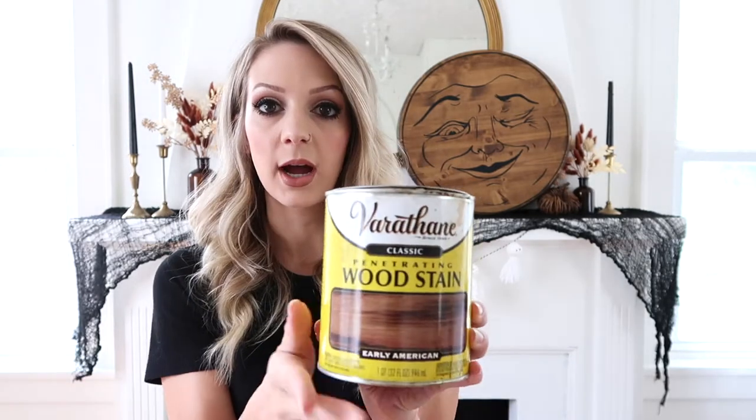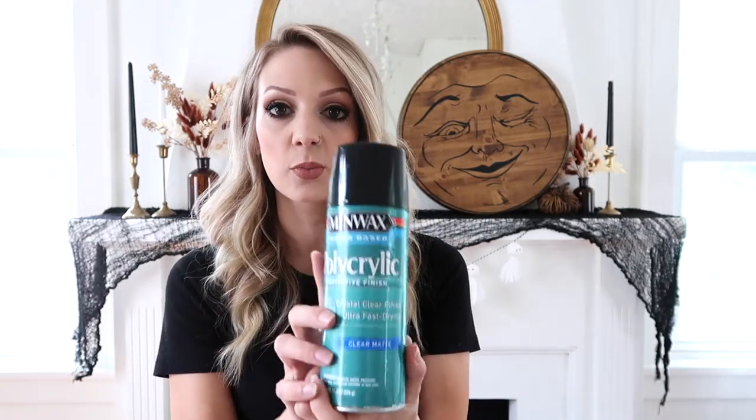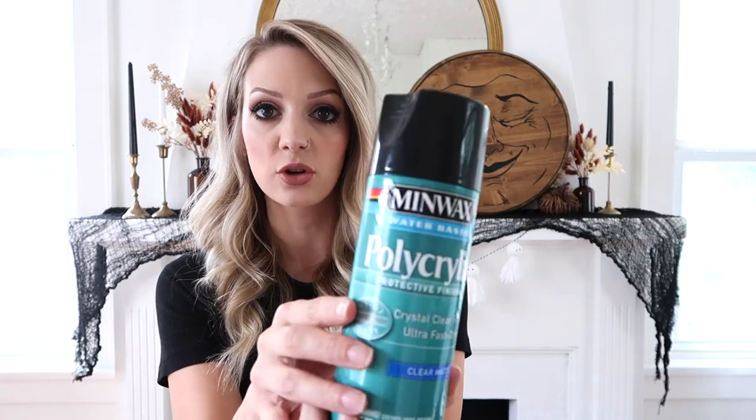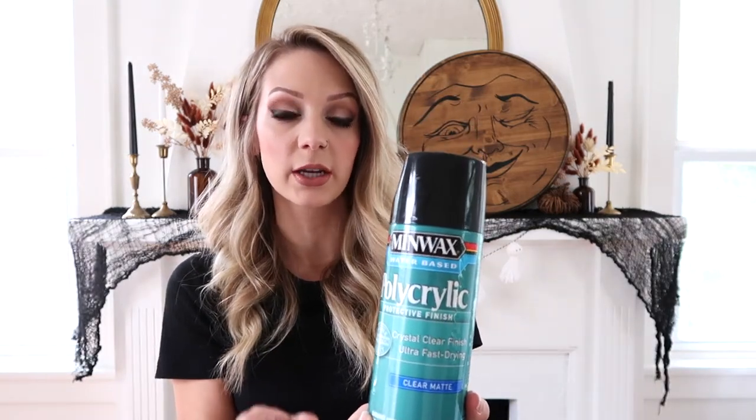So what I chose to do was use a stain. I had this one on hand already, an oil-based stain in the color early American. And then you want to go ahead and stain it and also put polycrylic over that, and you're going to do that before actually putting your stencil on.